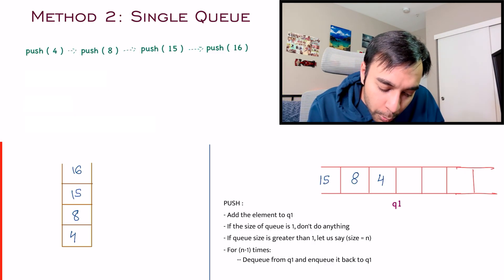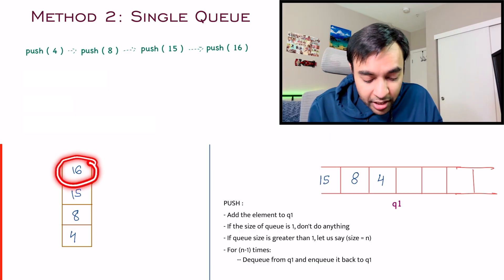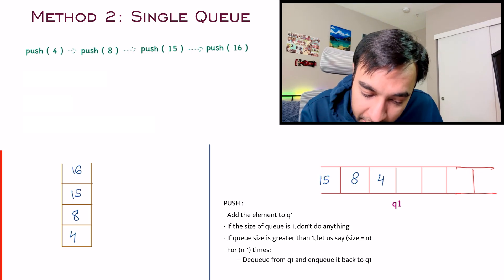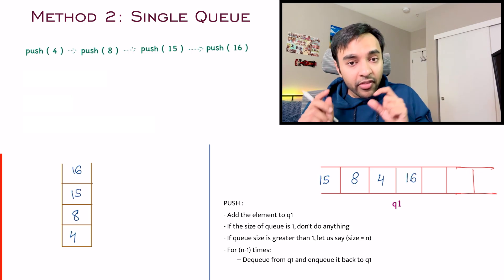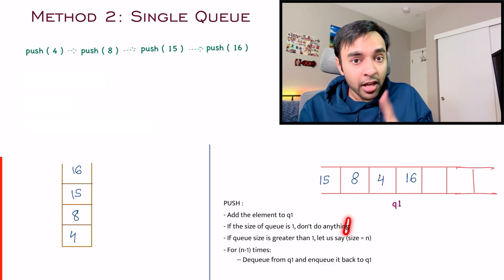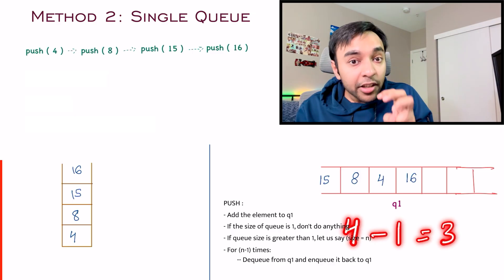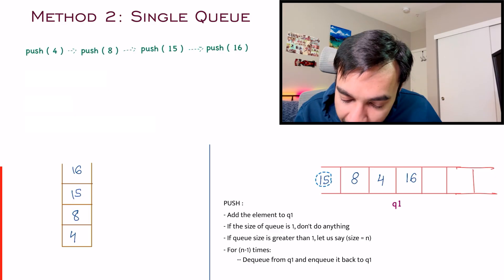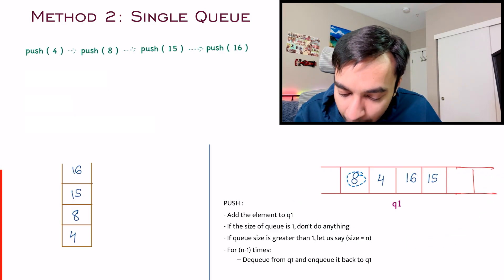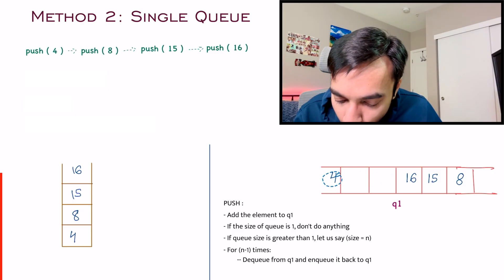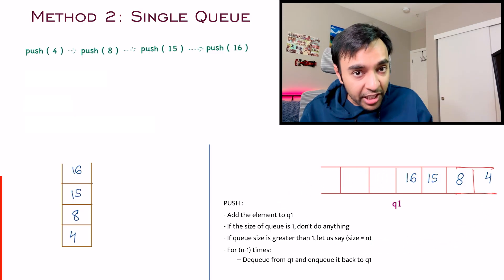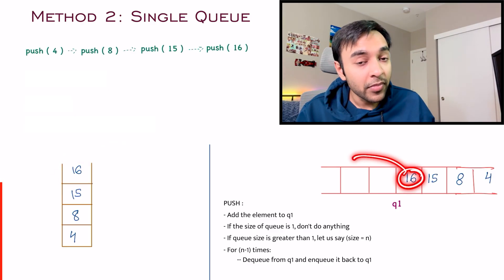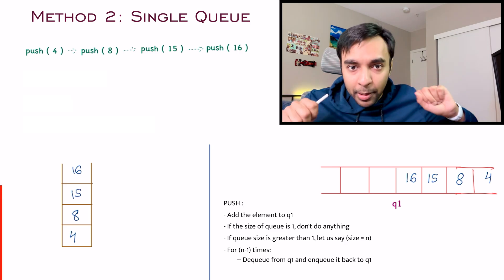Taking one more example: pushing element 16 to the stack. In the queue, you add 16. The queue size is now 4, so 4-1 equals 3 — you perform this operation three times. Pop an element and put it back, do it again, and one last time. After three iterations, if you have to pop, you get a 16 from the queue — same as from the stack.